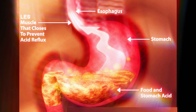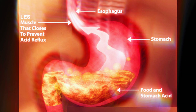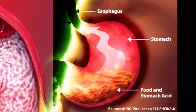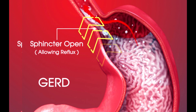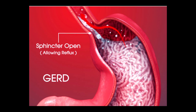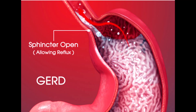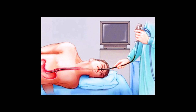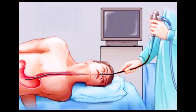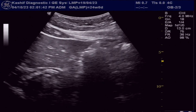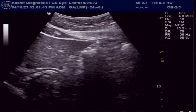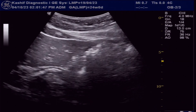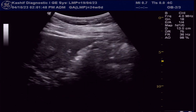Gastroesophageal reflux disease is a common upper GI disorder in which the stomach content flows up into the esophagus, resulting in symptoms and complications. Endoscopy is the primary diagnostic investigation; however, ultrasound can detect reflux through the gastroesophageal junction so that further investigation can be done.